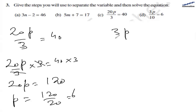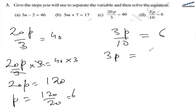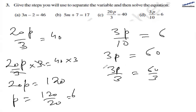For part (d) we have 3p divided by 10 equals 6. The first step is to multiply both sides by 10, leaving us with 3p on the left and 6 multiplied by 10 which is 60 on the right. Then we divide both sides by 3: we have 3p over 3 and 60 over 3. 60 divided by 3 gives us 20, so p equals 30 is the solution for part (d).